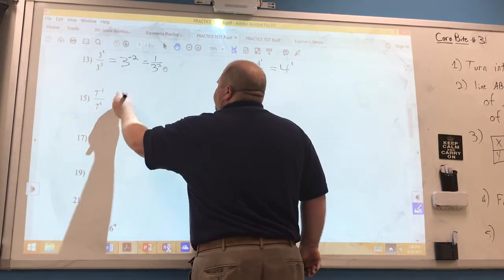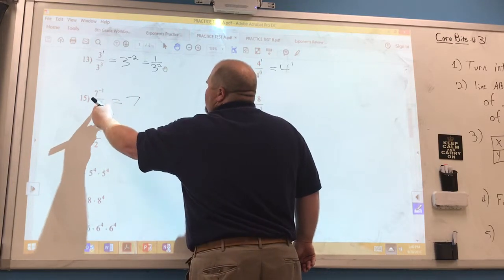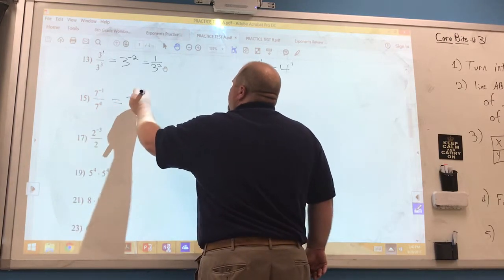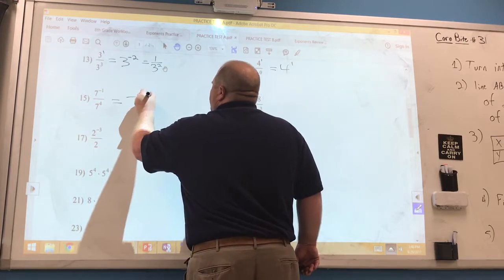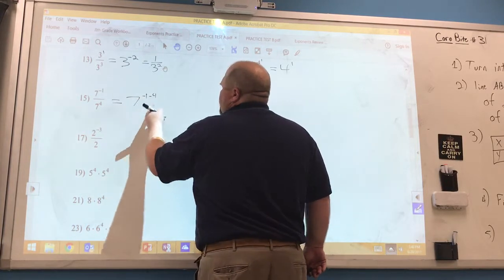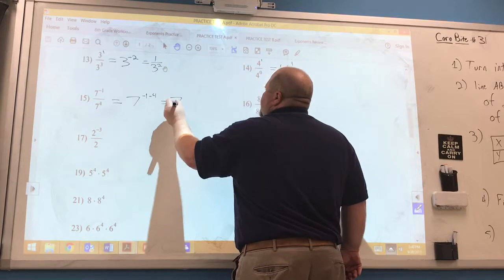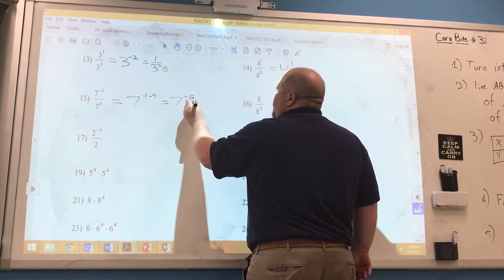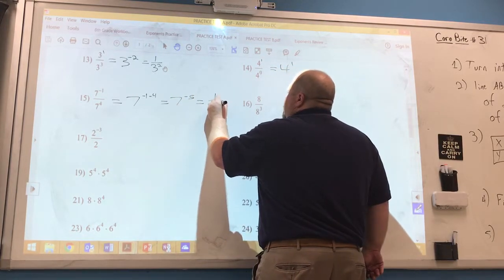Number 15, we've got negative 1 minus 4, so that's what is occurring. So we have 7 to the negative 5th power, which is 1 over 7 to the 5th.